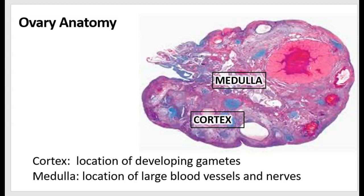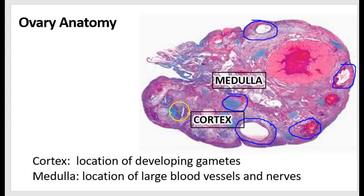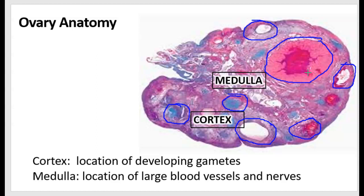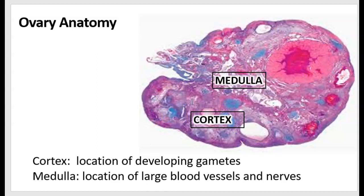Before looking at the function of the ovaries, let's look at the anatomy. The outer portion of the ovary is referred to as the ovarian cortex, and this is the location of developing gametes. You can see different structures in this picture that are circular — some are white, some are blue, and some are red. These structures are actually developing follicles that have developing gametes inside of them.